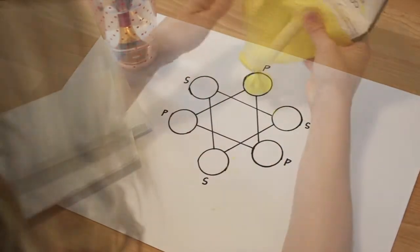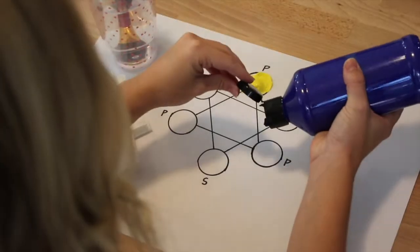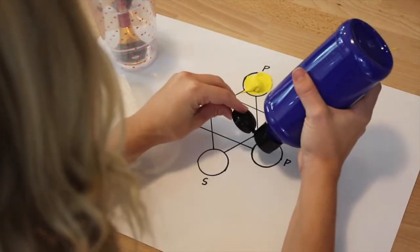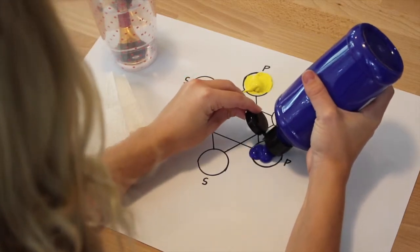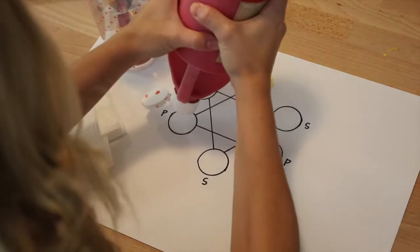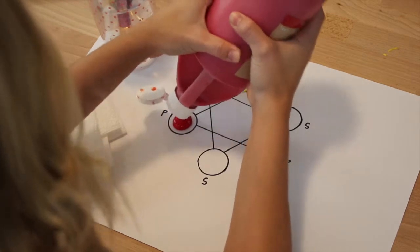We will start by placing our primary colors on the color wheel. We will put yellow on the top, blue on the bottom right side, and red on the bottom left.